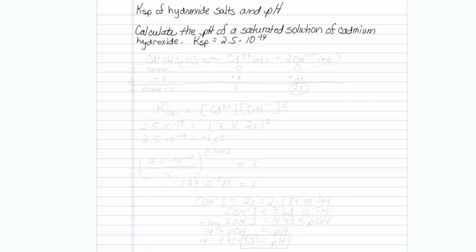Let's write the reaction of what occurs. We have cadmium hydroxide, that is a solid, and when it dissolves we get a little bit of cadmium 2 plus and two OH 1 minuses, two hydroxides.